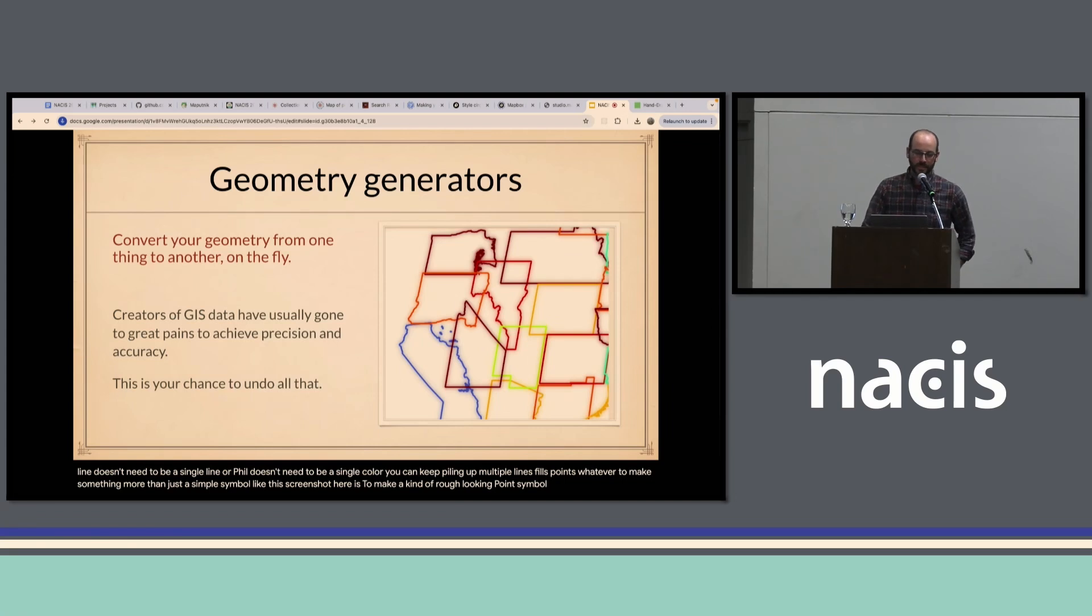Now geometry generator in QGIS is a big topic. Basically you can on the fly transform or create geometries in your symbology, instead of having to run geoprocessing like if you just want to simplify or something. So if you don't recognize the image here, the states are rotated upside down. For my purposes, the important thing is you can use some of these functions to undo accuracy and precision that people have gone to great pains to put into their data.